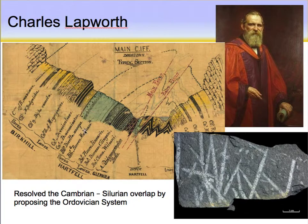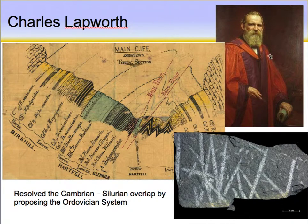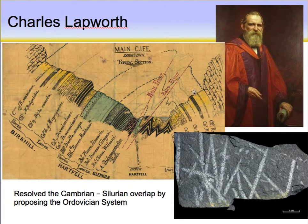Lapworth used graptolites to determine some of the geology in Scotland. If you look at some of the mountain ranges in the Scottish Highlands, the rock is folded and faulted. He realized there are a series of thrust faults and folding because he kept seeing the same fossils appear again and again, realizing that the whole sequence of rocks were stacked upon each other through some compressional event or convergent margin. In this chapter, he's described as the guy who named the Ordovician, but he had a lot more to do with recognizing guide fossils and how they can be used in deciphering structural problems.